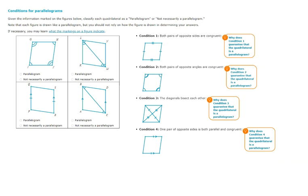Condition 1 is that both pairs of opposite sides are congruent. Condition 2, both pairs of opposite angles are congruent.